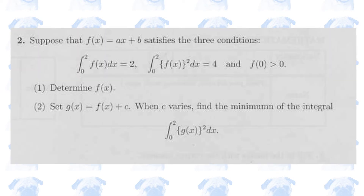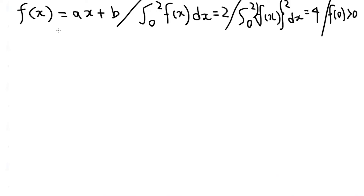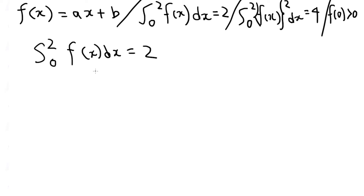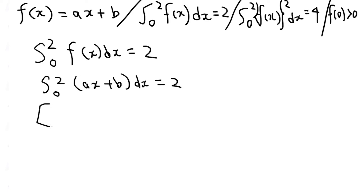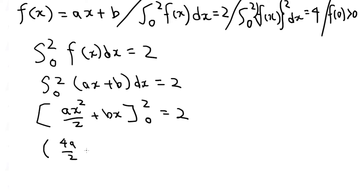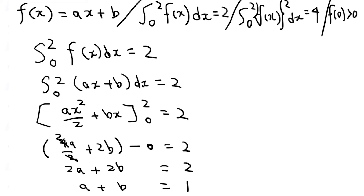Section 2, number 1. In this question, we are given a function which seems to be a linear function, and this function satisfies three conditions. In the first part, we need to determine the function f of x. Let's see what we can deduce from the first condition by performing the integration on the left-hand side. We arrive at a very simple equation: a plus b equals 1.